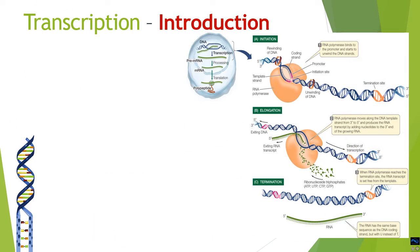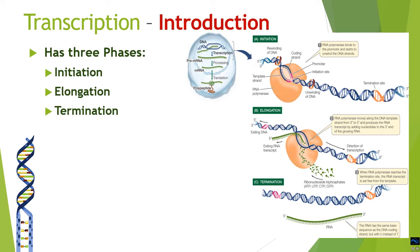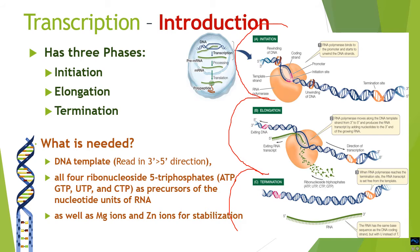Transcription has three phases: initiation, elongation, and termination, as shown in the accompanying diagram. These three processes are involved in decoding DNA into RNA and require a DNA template read in the 3' to 5' direction, four different ribonucleoside triphosphates — ATP, GTP, UTP, and CTP — and certain ions like magnesium and zinc to stabilize the transcribing complex.